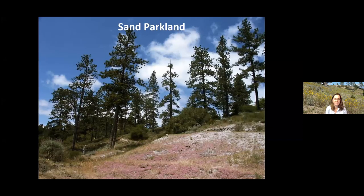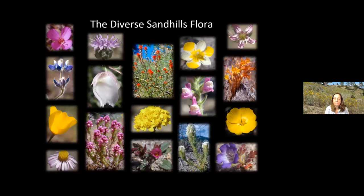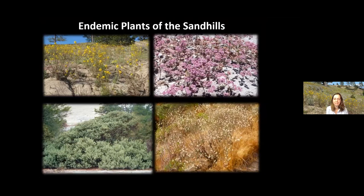Sand chaparral is really dominated by shrubs. The sand parkland is pretty much the opposite — it has very few shrubs and instead a scattered overstory of maybe 20–40% cover of ponderosa pine trees, and a diverse understory of herbaceous plants including Ben Lomond spine flower and many other species. The Sandhills flora is very diverse and includes four endemic species — species found only in the Sandhills. These are just the ones described by scientists; there are other species yet to be described.